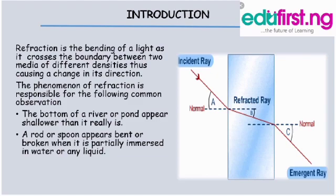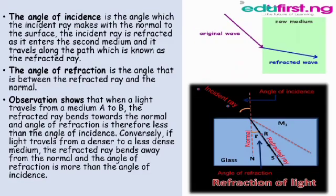The angle of incidence is the angle which the incident ray makes with the normal to the surface. The incident ray is refracted as it enters the second medium, and it travels along the path which is known as the refracted ray. The angle of refraction is the angle between the refracted ray and the normal.